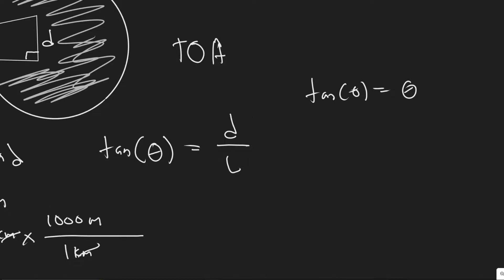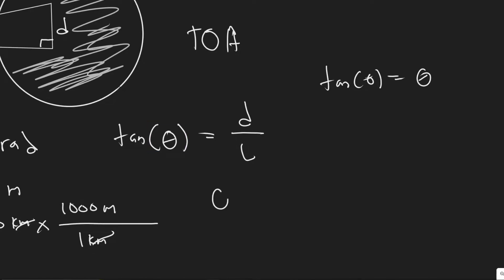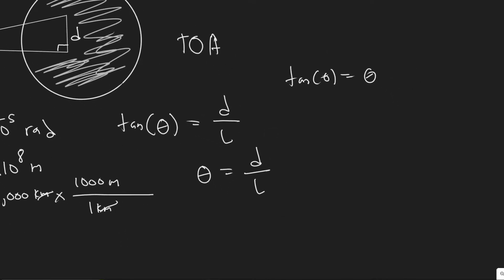So if you have a really small angle, it's really just equal to that value. So we can just rewrite this, since theta is extremely small, just as theta equals D over L. And we're just going to plug in that value.